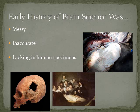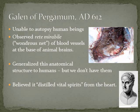The early history of brain science was messy, inaccurate, and lacking in human specimens. Most of this began with Galen of Pergamum around AD 612. He wasn't able to autopsy human beings. He had to perform necropsies on animals — mostly roadkill, whatever he could find to perform autopsies on.